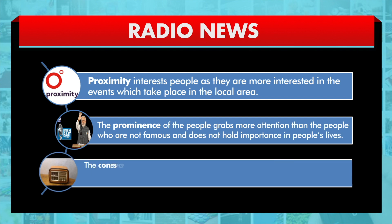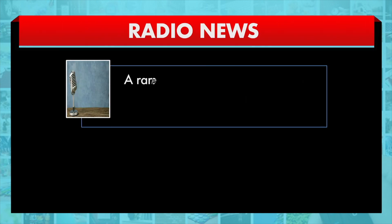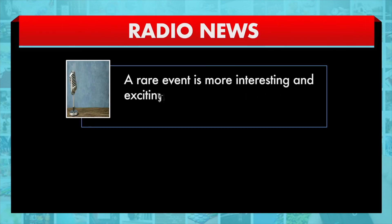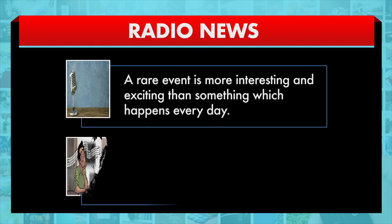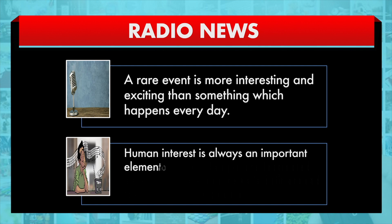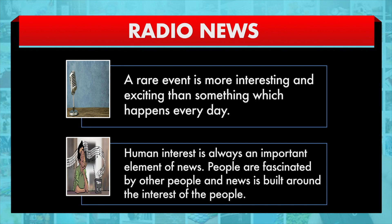Consequence is an important element of news. Some events make little impression on our lives, but other events like general elections have profound consequences. A rare event is more interesting and exciting than something which happens every day. Human interest is always an important element of news, as people are fascinated by other people, and news is built around the interest of the people.